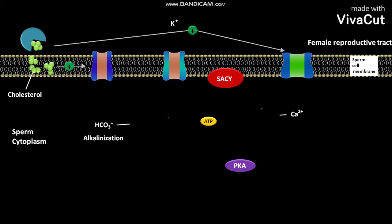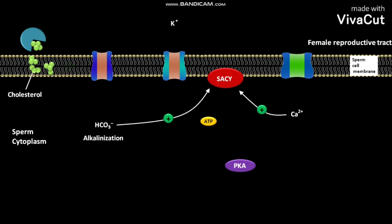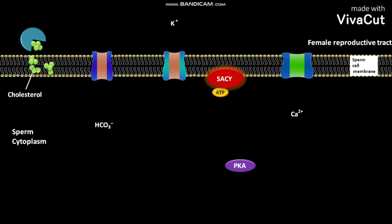The cytoplasmic bicarbonate ions and calcium ions activate the adenylate cyclase SACY. The cytoplasmic ATP then binds to the active SACY. The active SACY catalyzes a biochemical reaction in which the bound ATP is converted into cAMP. Due to this conversion, the cAMP concentration increases in the cytoplasm.